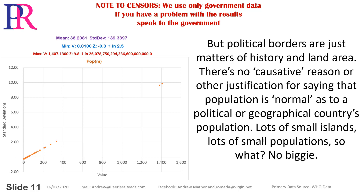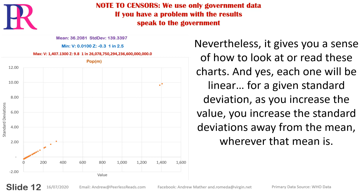But political borders are just matters of history and land area — there's no reason to expect population to be normally distributed for political or geographical country populations. Lots of small islands means lots of small populations, so no big deal. Nevertheless, it gives you a sense of how to read these charts, and yes, each one will be linear: for a given standard deviation, as you increase the value, you increase the standard deviations away from the mean.